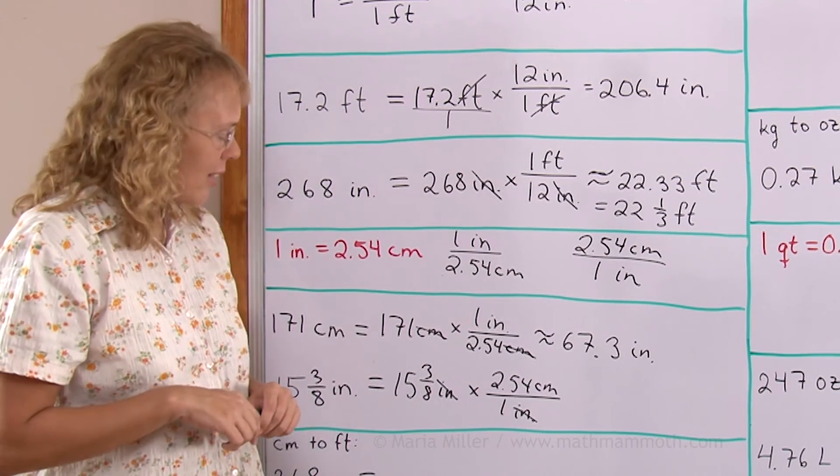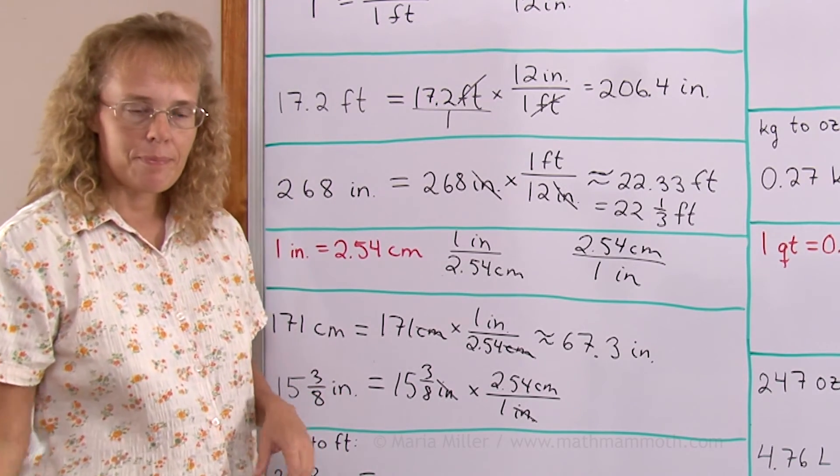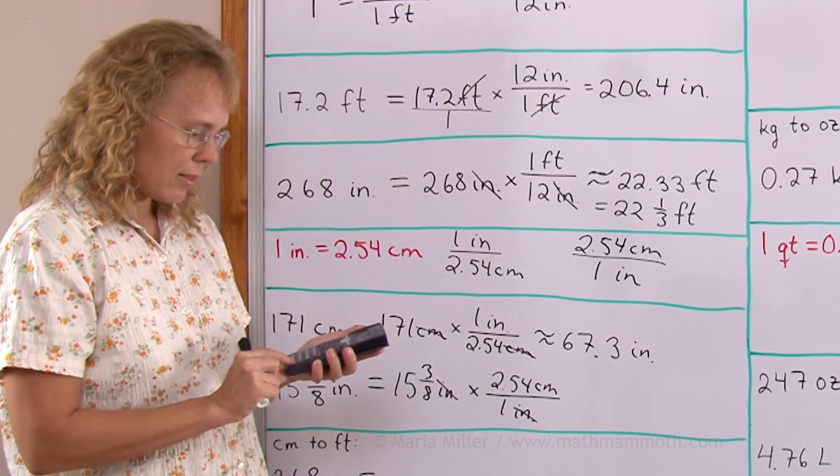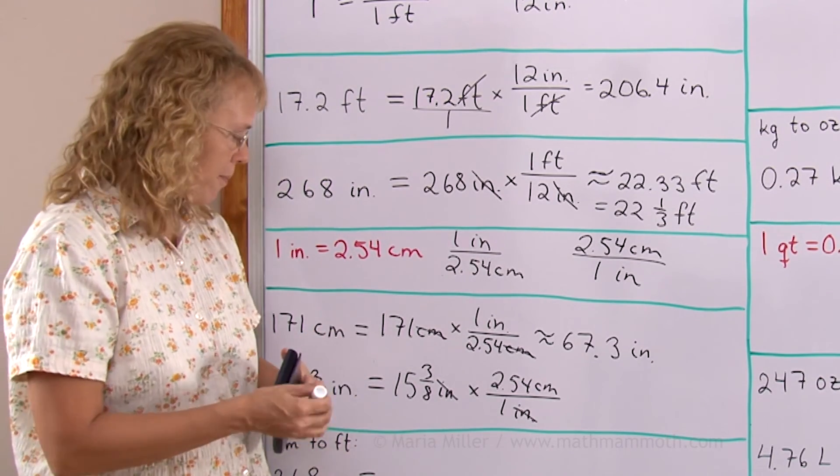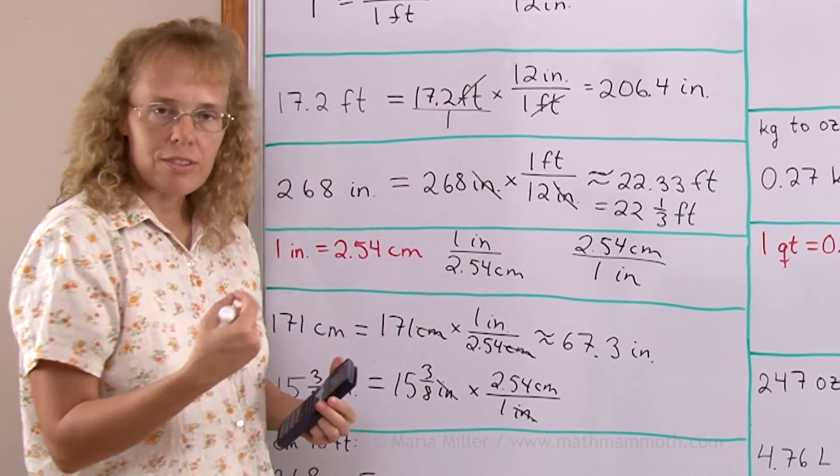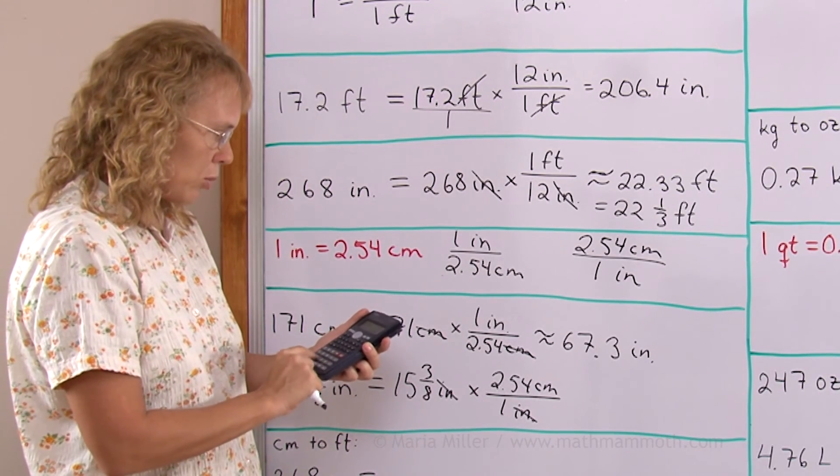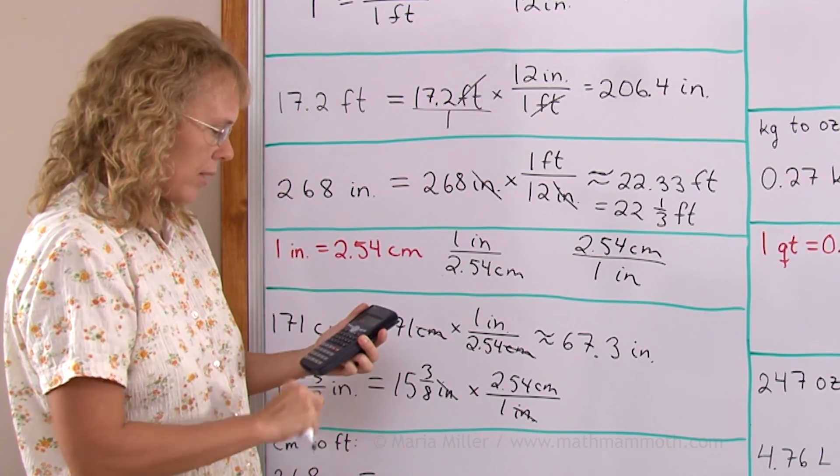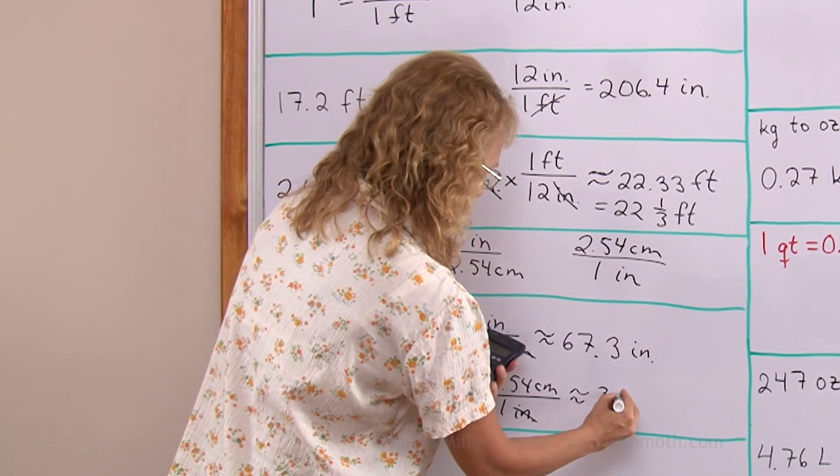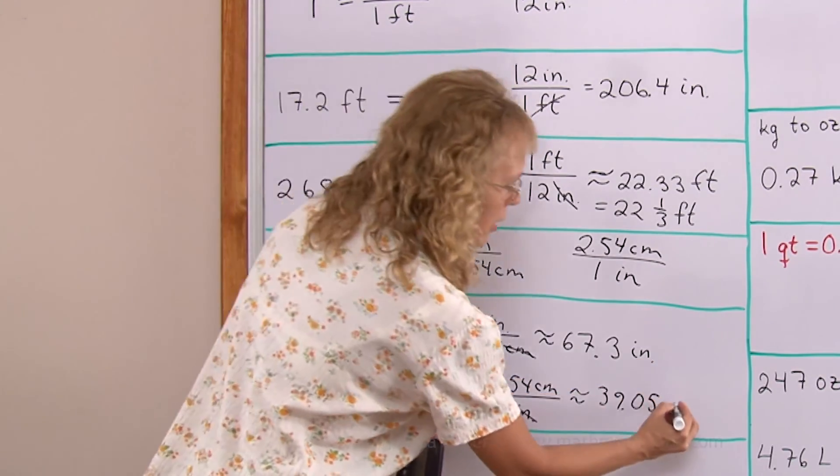convert 3 eighths into a decimal. So 3 divided by 8 and we get 0.375. So this is actually 15.375. And then that times 2.54 and we get about 39.05, and centimeters is our unit.